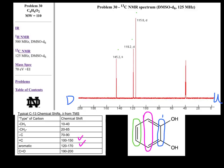The carbons closest to the oxygens correspond to the most downfield signal. The carbons circled in green experience the least de-shielding because they are located furthest from the oxygens, corresponding to the most upfield signal. The carbons circled in pink feel de-shielding somewhere in between the blue and green carbons, so they correspond to the middle signal.